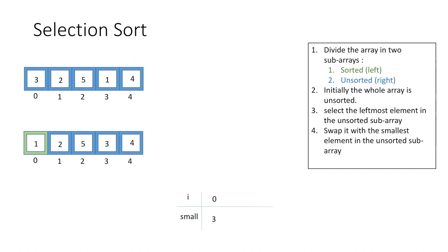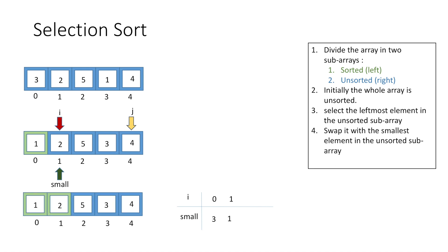We repeat the procedure and increment i by 1 to select the leftmost element in the unsorted sub-array, again using small to store the index of the smallest element. Looping through the unsorted array using j, 2 is smaller than 5 — no change in small. Moving forward, 2 is also smaller than 3 — no change. Finally, 4 is also greater than 2, so small retains index 1. Since i and small are pointing to the same element, 2 is already at its sorted position. So 1 and 2 become part of the sorted sub-array.